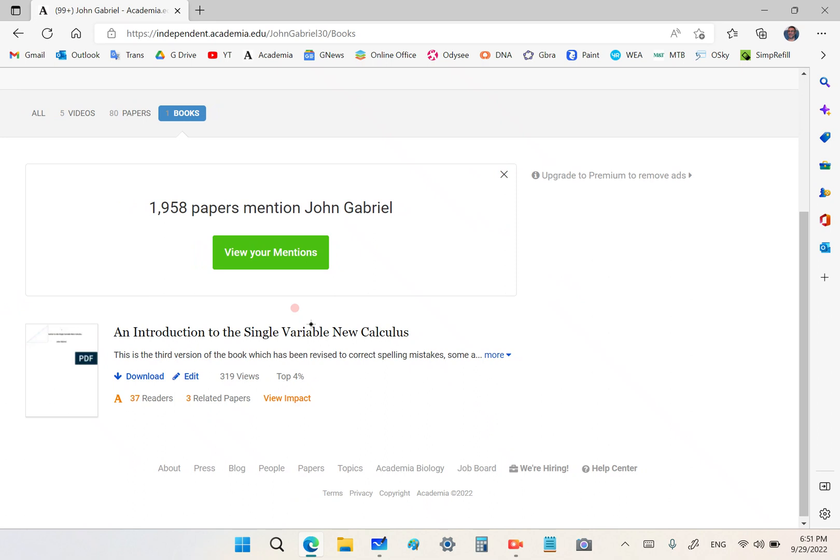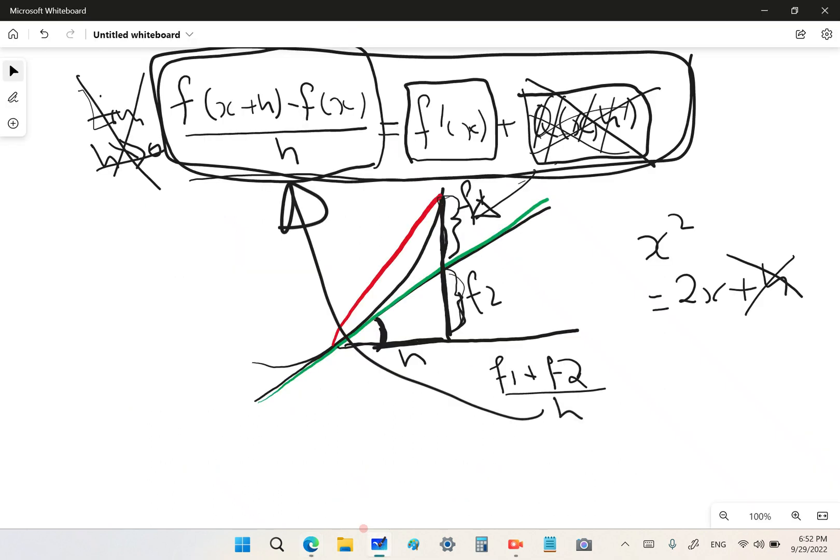So mainstream academics are incorrigibly ignorant and arrogant, stupid and jealous. And actually they're evil, which makes it just so much worse. That's pretty much all I have to say for this video. My name is John Gabriel. Until next time, folks. Goodbye.